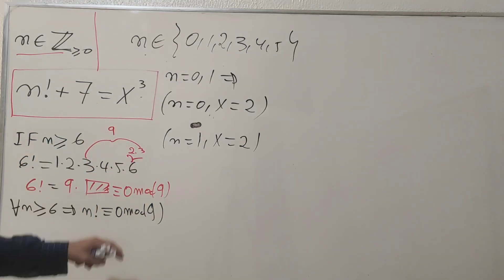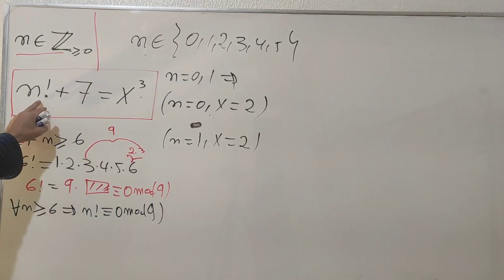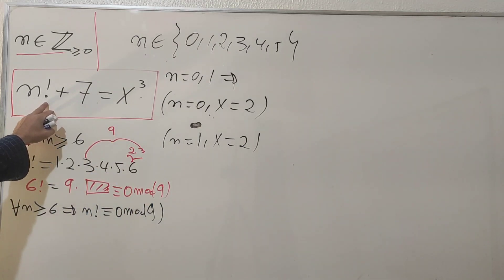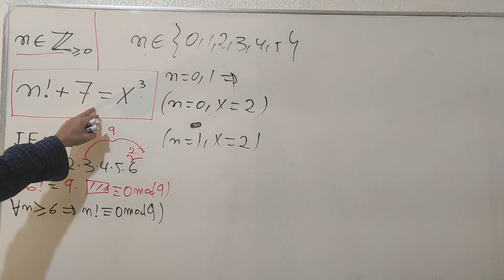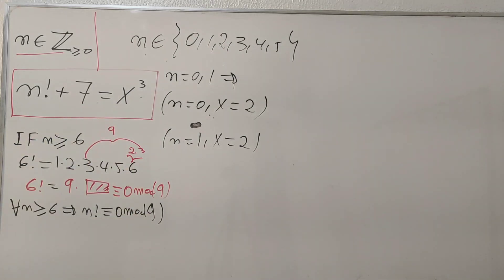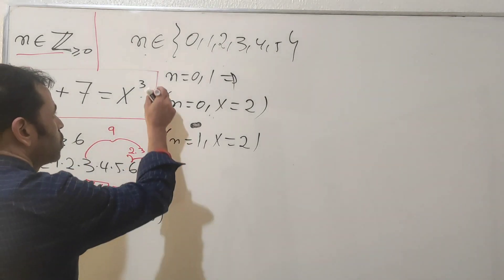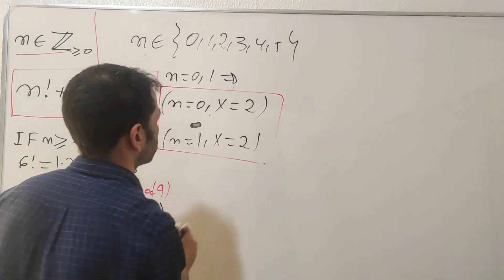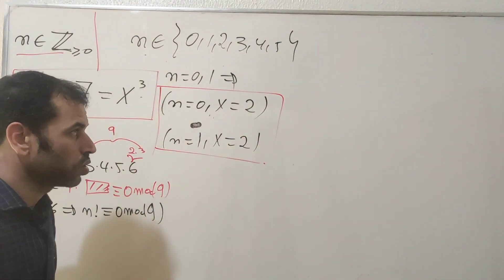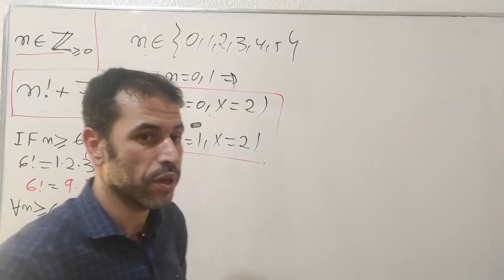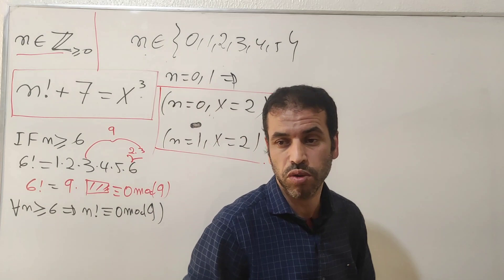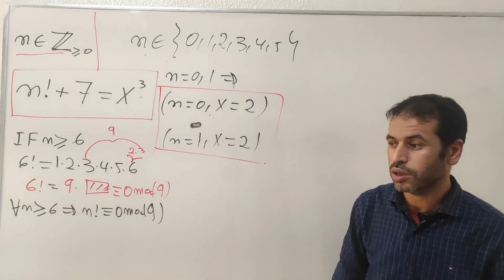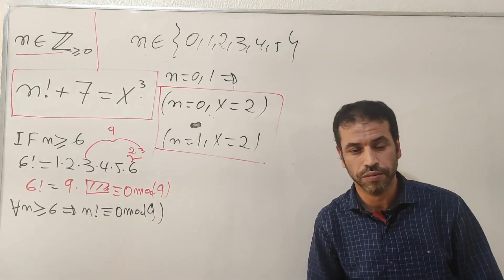Finally, for n = 5: five factorial is 120, and 120 plus seven is 127, which is not a perfect cube. So the only two solutions we found are (n, x) = (0, 2) and (n, x) = (1, 2). Don't forget to hit the subscribe button and subscribe to the channel. Thank you for watching, and we'll see you in the next video!